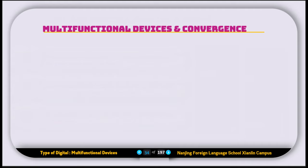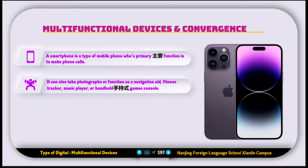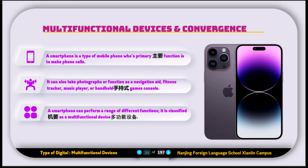Next is multifunctional devices and convergence. A smartphone is a type of mobile phone whose primary function is to make phone calls. It can also take photographs or function as a navigation aid, fitness tracker, music player, or handheld gaming console. A smartphone can perform a range of different functions, which is why it is classified as a multifunctional device.